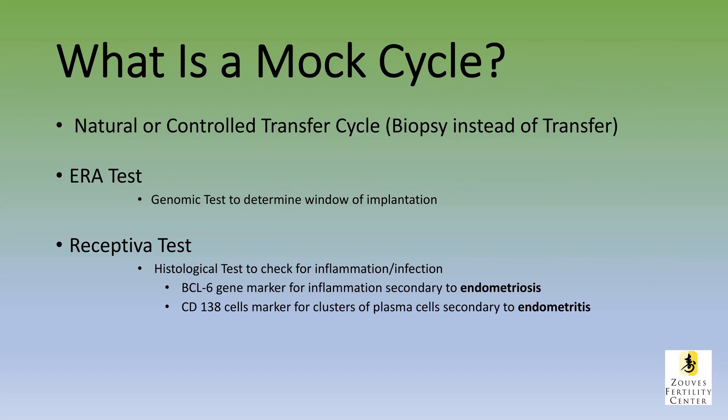One of the markers is the BCL6 gene, and this is a marker for inflammation, usually secondary to endometriosis. The second biomarker is the CD138 plasma cell, which is a marker for endometritis.